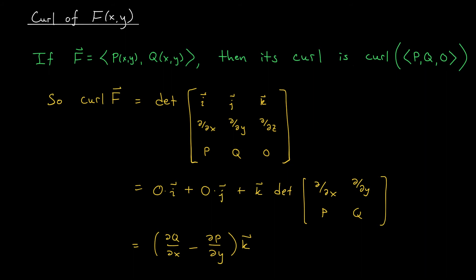In particular, we can rephrase our component test in terms of curl. Remember, the component test tells us that if a vector field is conservative, then ∂p/∂y must equal ∂q/∂x — that is, the curl of our vector field is zero. So conservative vector fields must have zero curl. We also have a converse: if the two partial derivatives are equal and the domain of f is simply connected, then f is conservative. Rephrased in terms of curl: if the curl is zero and the domain is simply connected, then f is conservative. This holds for vector fields on R3 as well.